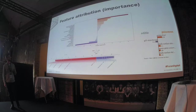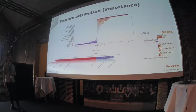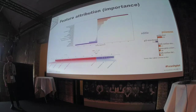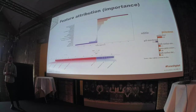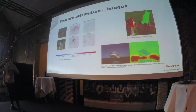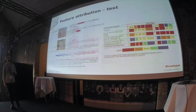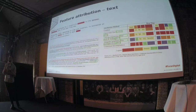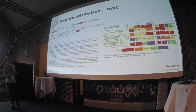The most common and popular method right now, with a lot of good implementations, is called feature attribution — it's about identifying which variable was most responsible for generating a specific output. You can do this with images, where it's about which pixels were most relevant, or with text, where it's about which word in the text was most relevant for making a specific decision.